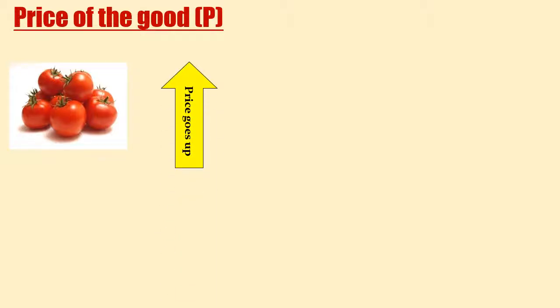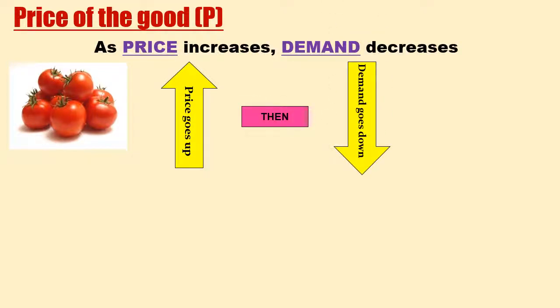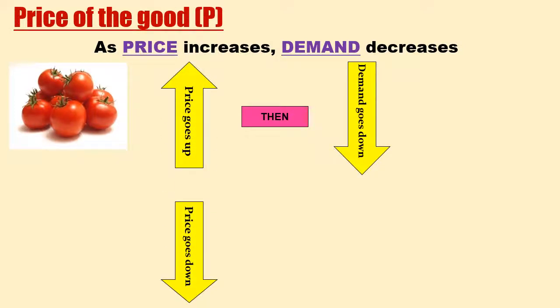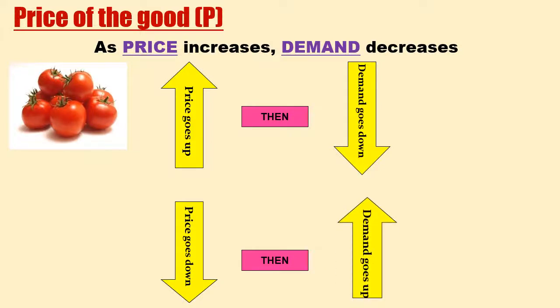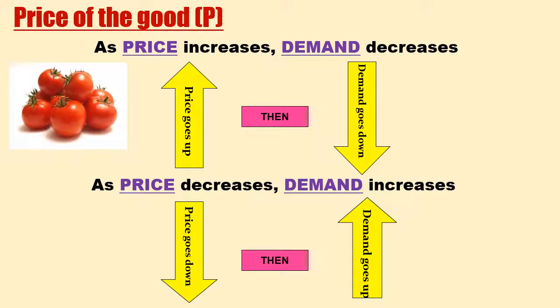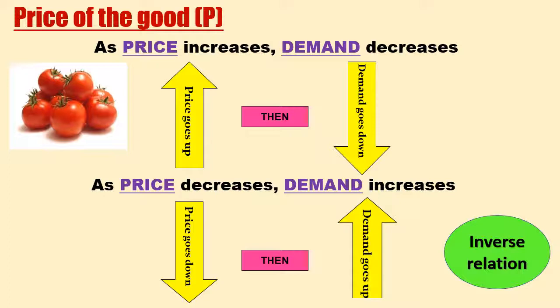Let us consider the good as tomato. When the price of tomato goes up, the consumer will buy less tomato, so demand for tomato goes down. Hence, as price increases, demand decreases. Similarly, when the price of tomato goes down, the consumer will buy more tomatoes, so demand goes up. Therefore, price and demand have an inverse relation — they move in opposite directions.